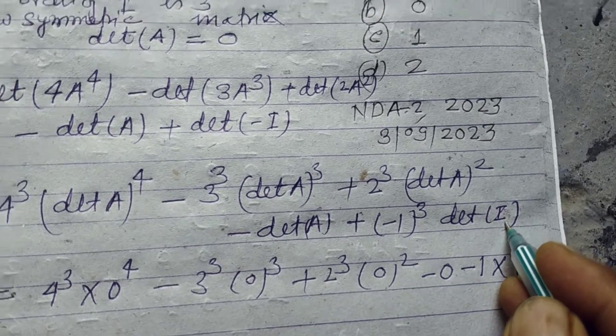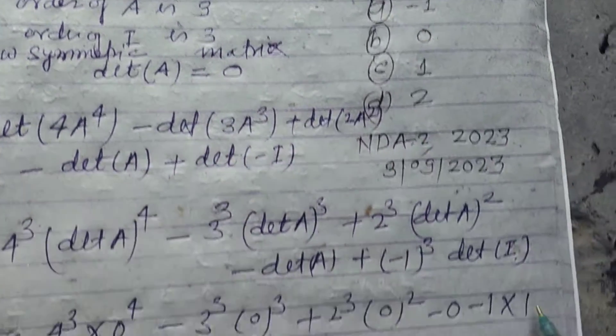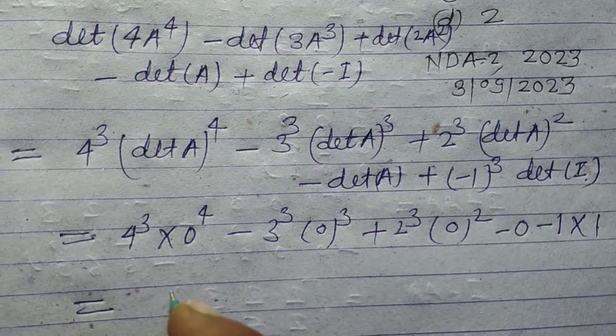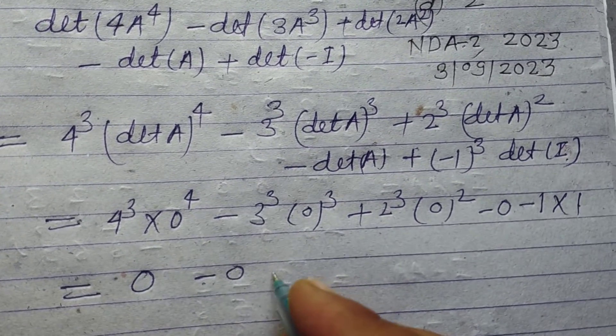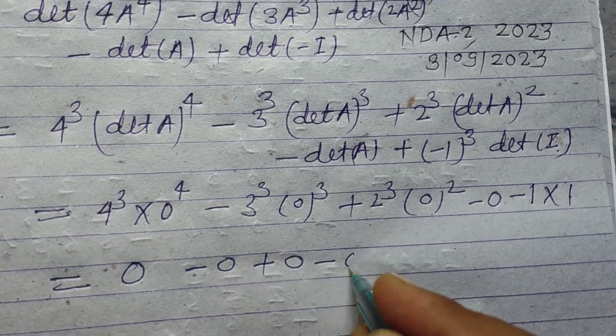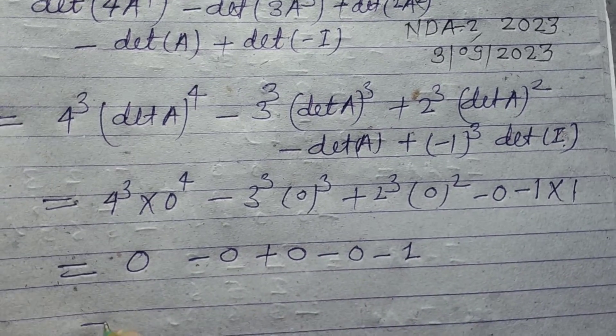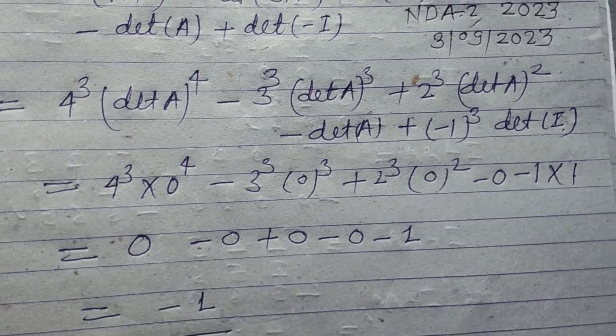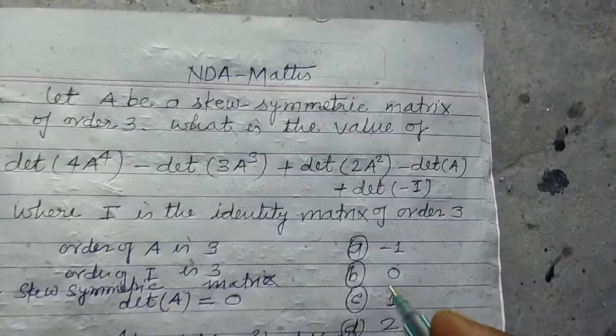So this is 0, 0, 0 minus 0 minus 1. Therefore, the answer is -1. Therefore, student, the answer to this question is (a), which is -1.